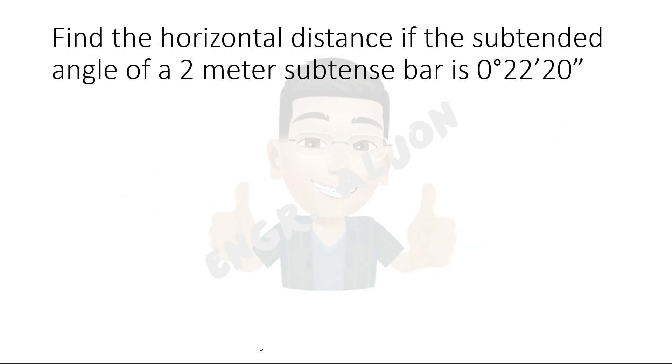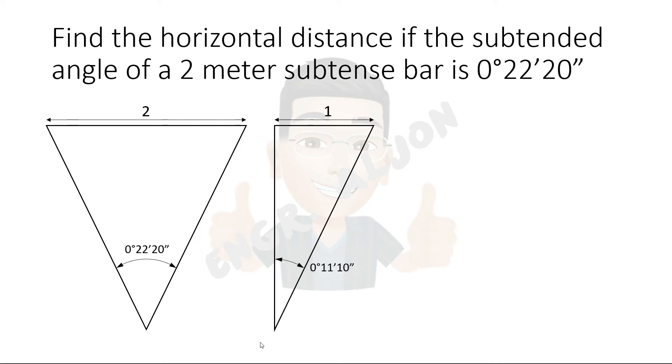Let us try to solve a problem. Find the horizontal distance if the subtended angle of a 2 meter subtense bar is 0 degrees 22 minutes and 20 seconds. So this is the figure. Since this is just an isosceles triangle, we can consider half of the triangle and make it a right triangle. Now, to solve for the horizontal distance, we just use the tangent part of our very well-known SOHCAHTOA. That is, tangent angle equals opposite side over adjacent side. We get HD equals 307.86 meters.